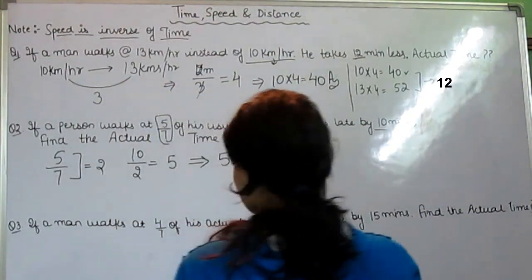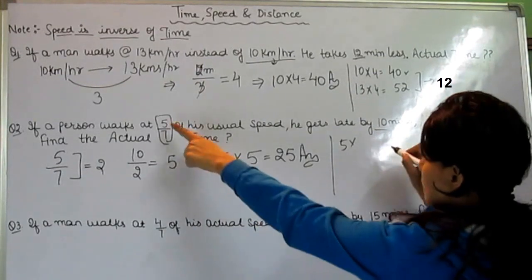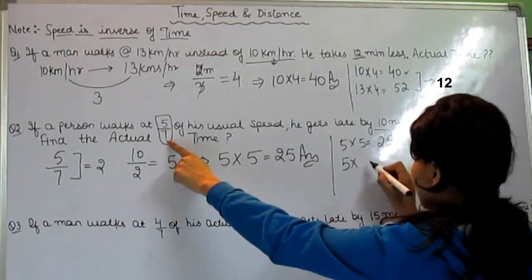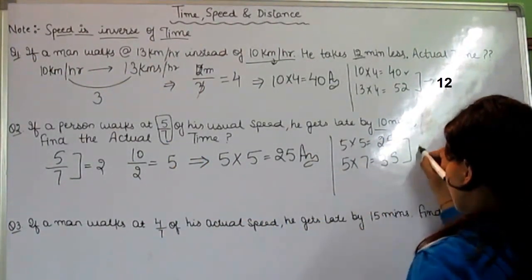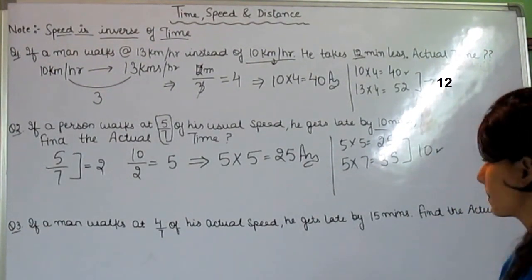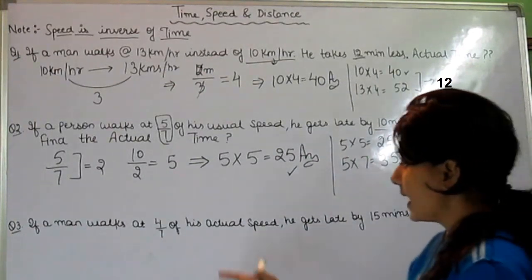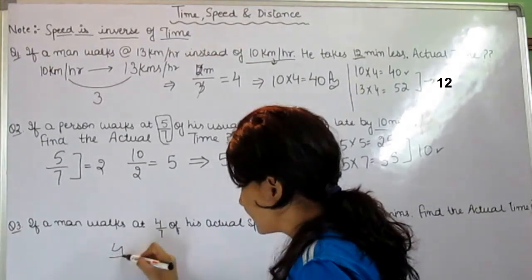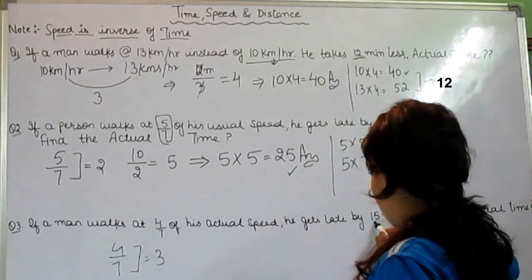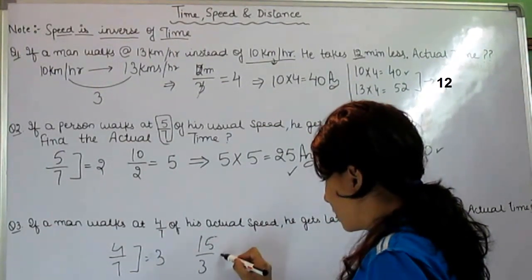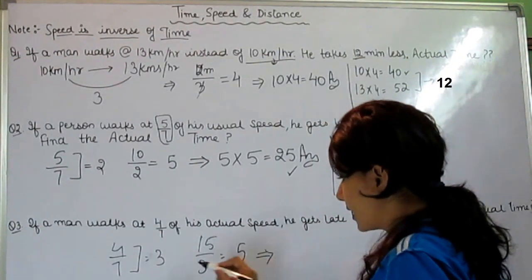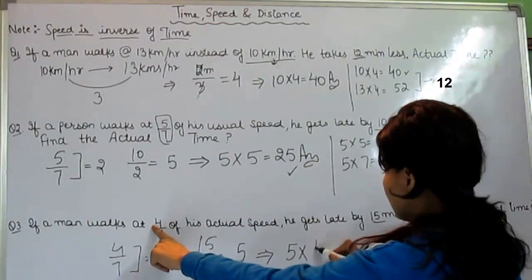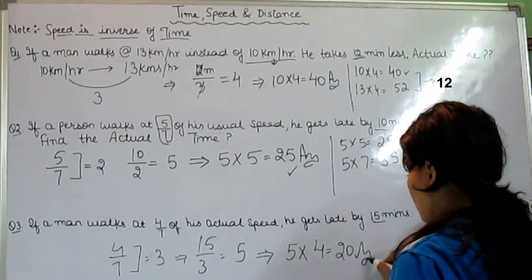To check: 5 multiplied by 5 is 25, and 5 multiplied by 7 is 35 — the gap is 10 minutes, which matches what was given. So the answer is right. For the next similar problem with 4/7 speed, the gap is 3. Divide 50 by 3 to get 5, then multiply 5 by the numerator 4 — the answer is 20. As simple as that.